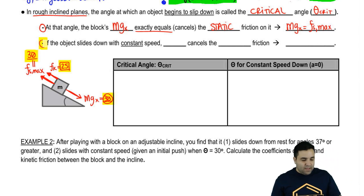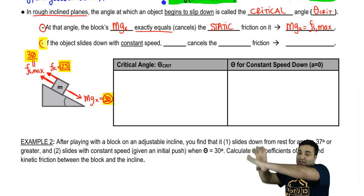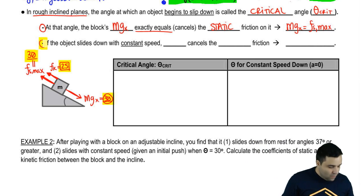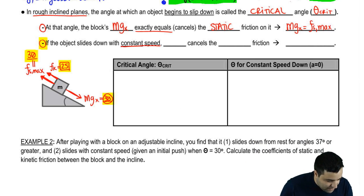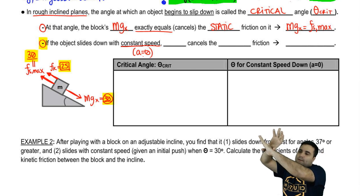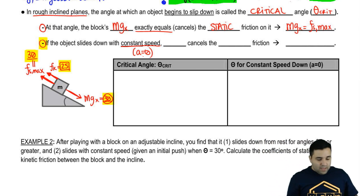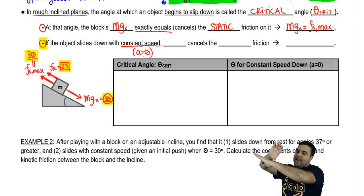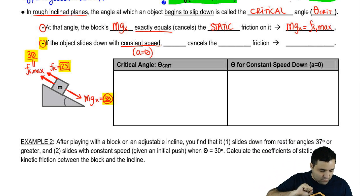The second angle I want to talk about is one that allows you to move down the plane at a constant speed — meaning no acceleration. How is that possible? The only way this works is if the block is placed at an angle that would not overcome static friction on its own, where mgx is exactly 25.